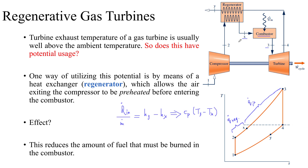For the same cycle, if we remove the regenerator, the only thing that is going to change is the amount of heat content or fuel provided — so Q dot in changes. The net work developed per unit mass of flow remains the same whether the regenerator is added or not. The only difference is that the heat content added is reduced. In terms of thermal efficiency, which is the ratio of net work to heat content added, because the heat addition has reduced, the thermal efficiency for that cycle is going to increase.